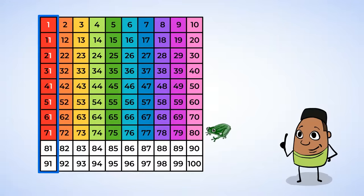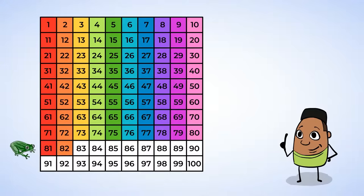Just like before, all of the red numbers have a 1 at the end. So after 80, we start with, come on, froggy, 81. Then 82. Then 83, 84, 85.